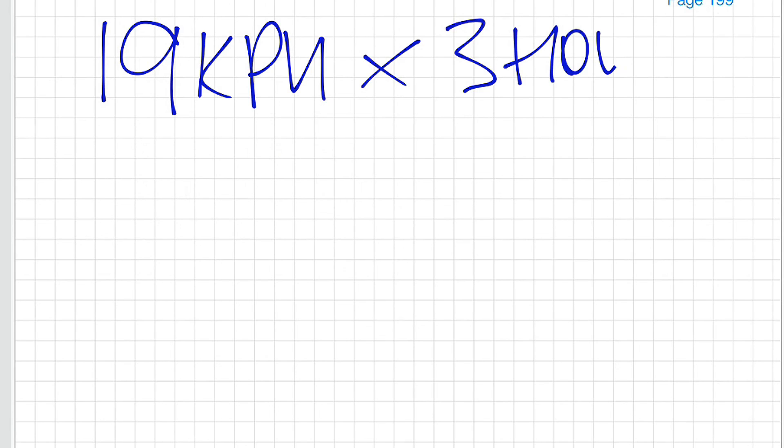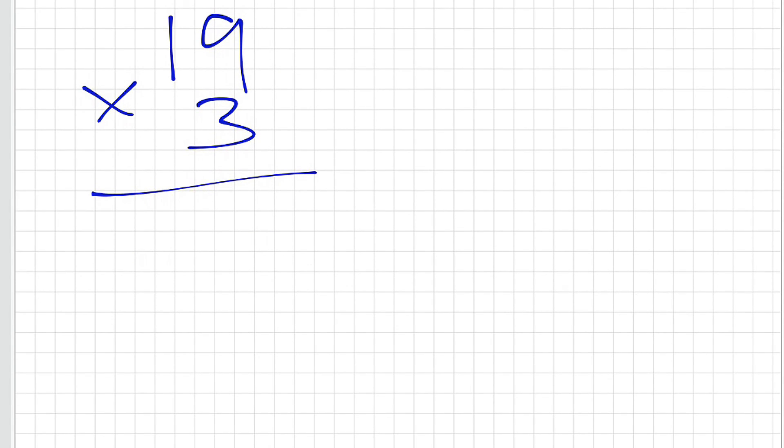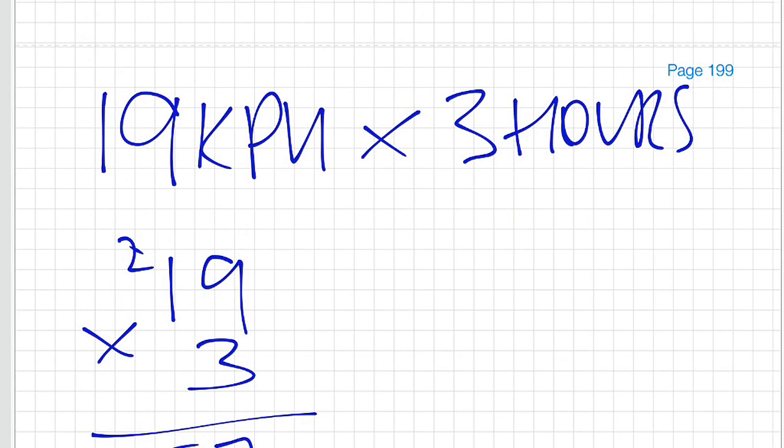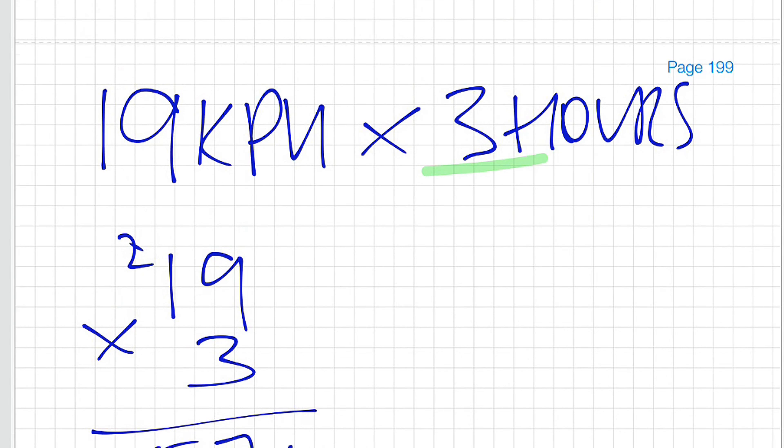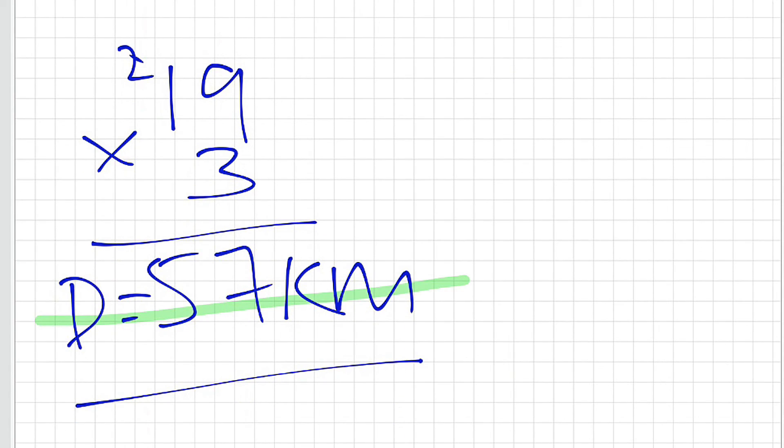Question number 10: we're travelling at a speed of 19 kilometers per hour and we've done so for 3 hours. This simply becomes 19 multiplied by 3, 19 kilometers per hour multiplied by 3 hours. 9 times 3 is 27, 1 times 3 plus the extra 2 is 5, 57. Because we were dealing with hours already and not minutes, this answer now becomes our final answer of 57 kilometers.